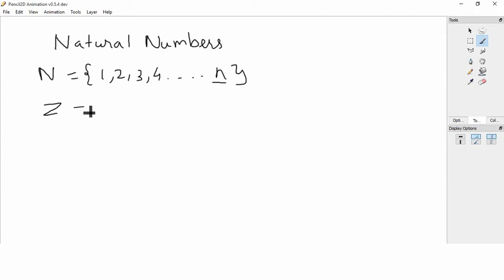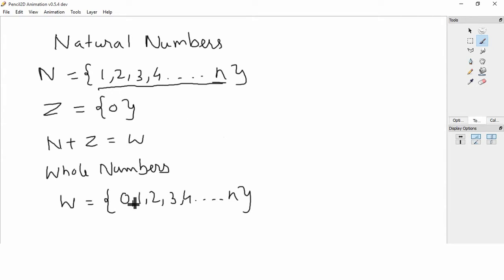Suppose we have another set which has only one single element 0, and if we add this to N, then we get a new set which is called whole numbers. So what are basically whole numbers? Whole numbers denoted by W start from 0, 1, 2, 3 so on till N. Just whole numbers...